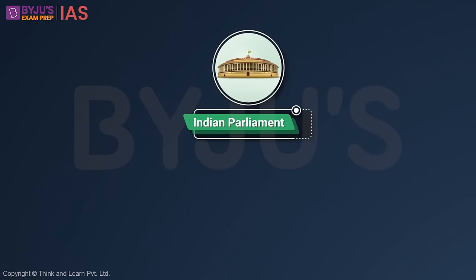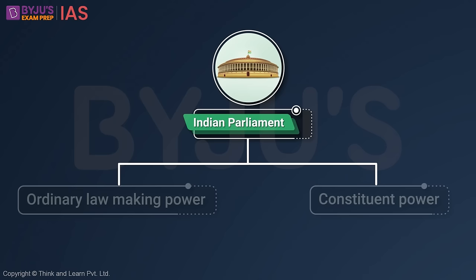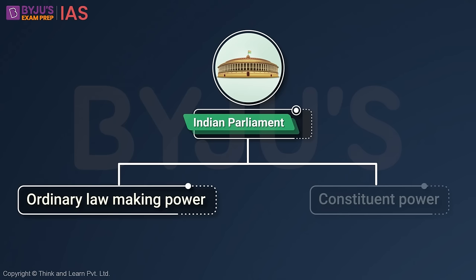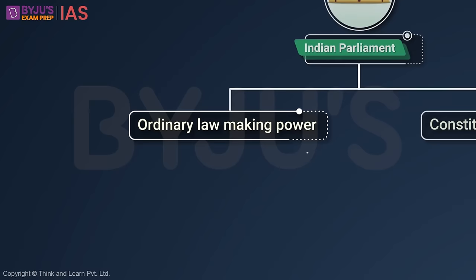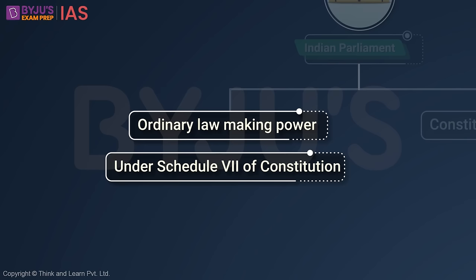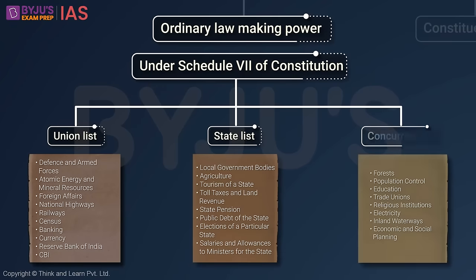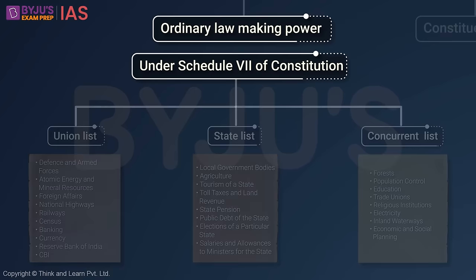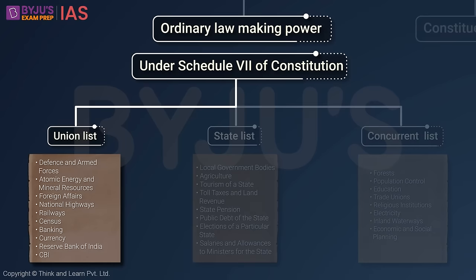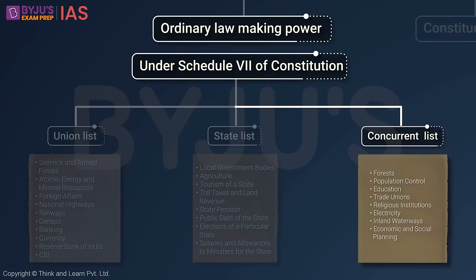Indian Parliament has two broad powers: ordinary lawmaking power and constituent power. Under ordinary lawmaking power, we have distribution of powers under Schedule 7 of the Constitution — the Union List, State List, and Concurrent List. Indian Parliament is the supreme lawmaking body of this country. It has the power to make a law on any item mentioned in the Union List and any item mentioned in the Concurrent List.